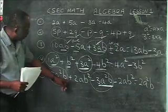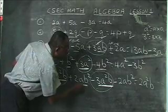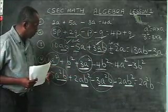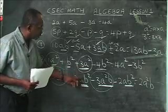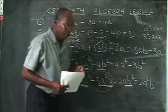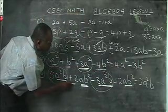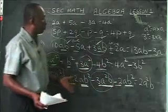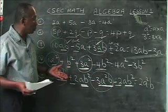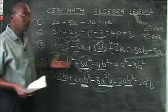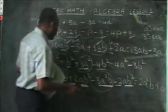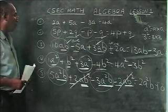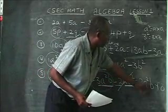Proceeding further, we have 2ab squared and minus 2ab squared — these are also similar. Remember ab squared means a times b times b. Here we have plus 2 and minus 2: if I have 2 dollars and owe 2 dollars, I have nothing — zero. So it's 0ab squared, which is simply 0. These two terms cancel each other and drop out. So the final answer is simply 2a squared b.